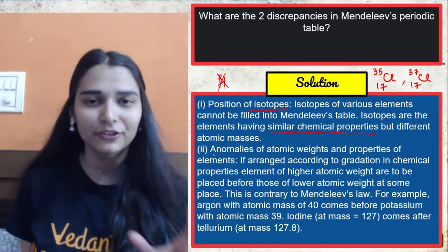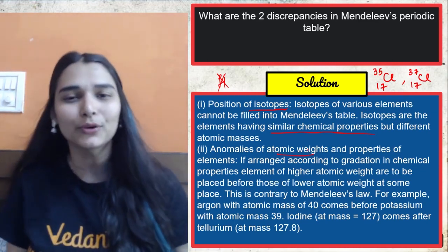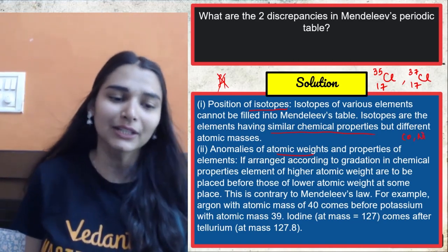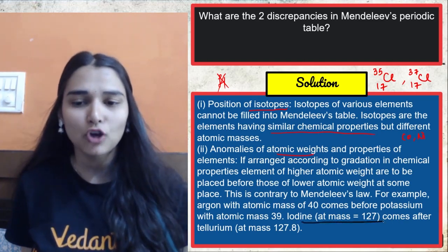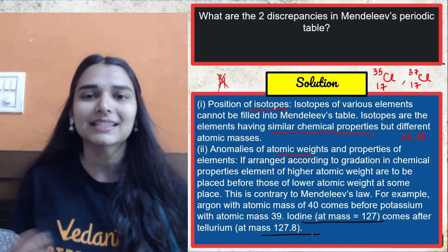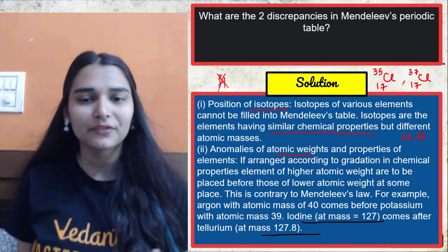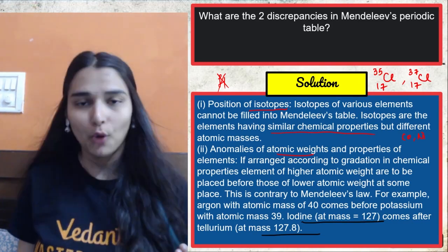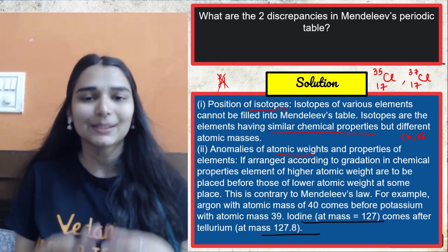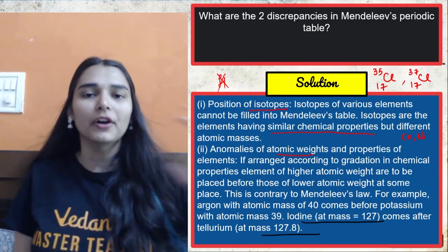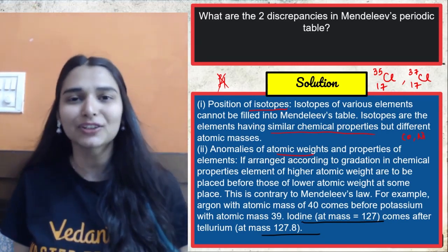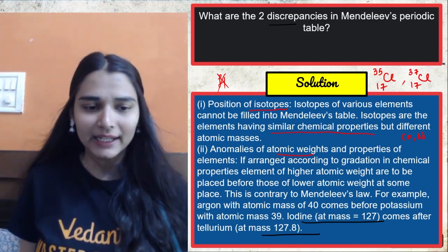So issue that arrived in front of Sir Mendeleev was that isotopes have different masses, same chemical properties. So he was confused that my table is arranging the elements in increasing order of atomic masses. Elements with same chemical properties have to fall together in the same group. So that was not going with the isotopes. The position of isotopes was the major most discrepancy of the Mendeleev's periodic table. Apart from that, position of hydrogen was not given by him. Hydrogen is a non-metal that resembles the alkali metals, it resembles the halogen. So he was like confused, where do I keep this hydrogen?